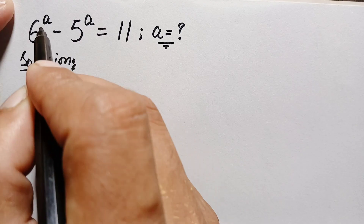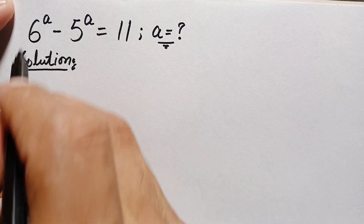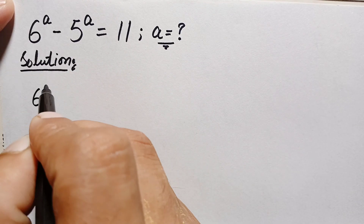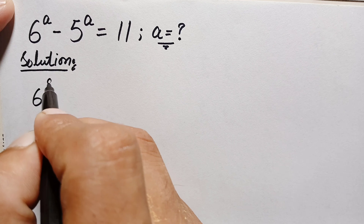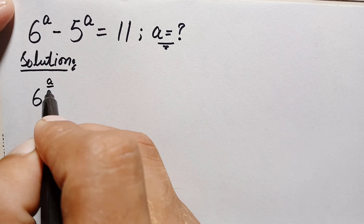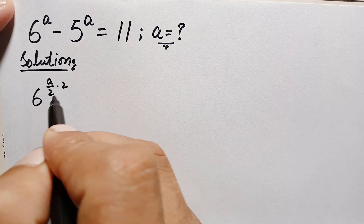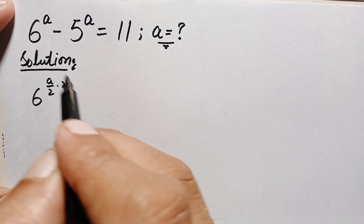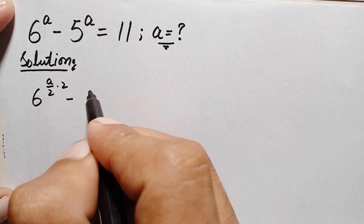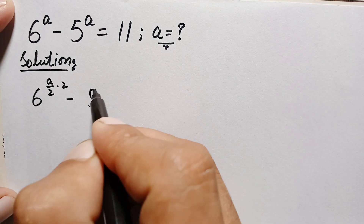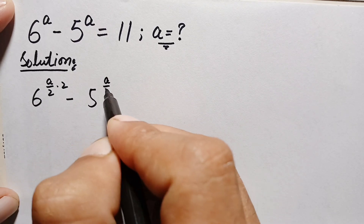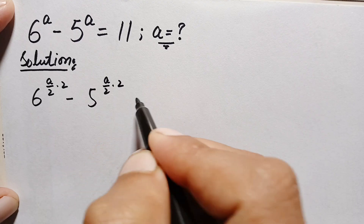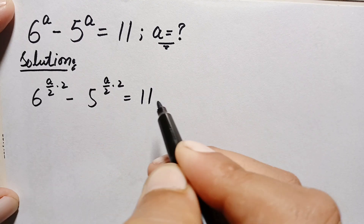First of all, we can rewrite these two powers. 6 raised to power a can be written as 6 raised to power (a/2 × 2), where the 2s cancel, giving a. Similarly, 5 raised to power a becomes 5 raised to power (a/2 × 2), so the equation becomes 6 raised to power (a/2 × 2) minus 5 raised to power (a/2 × 2) is equal to 11.